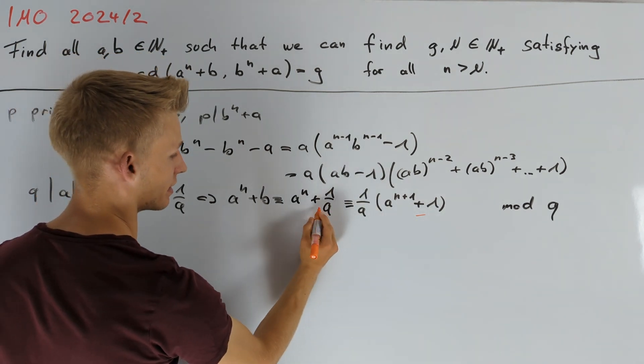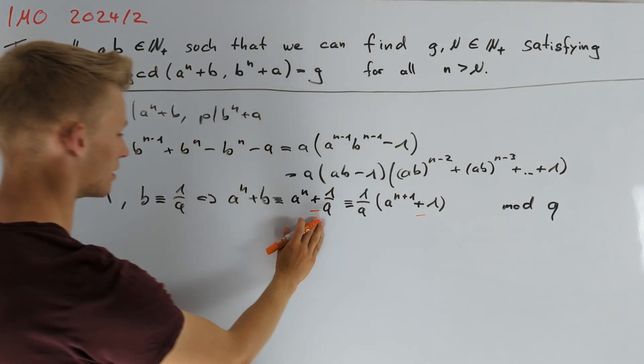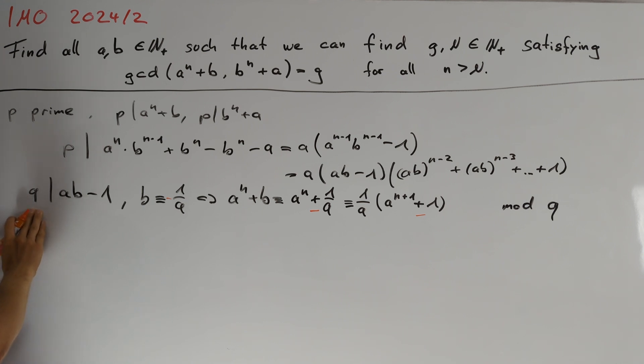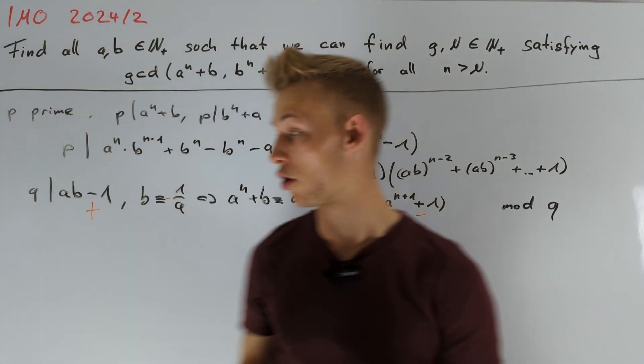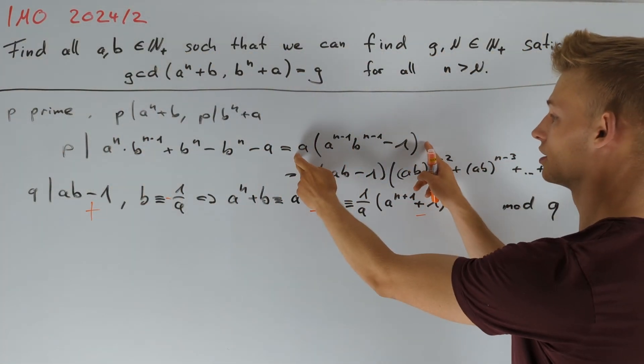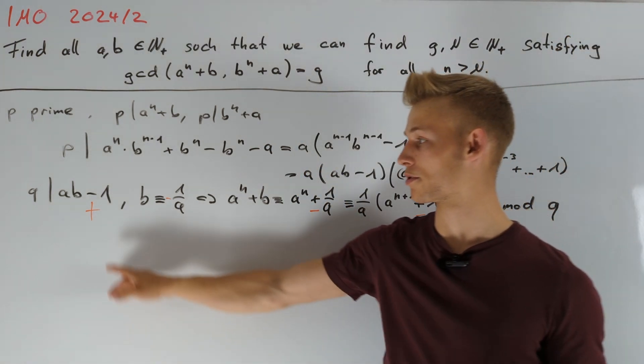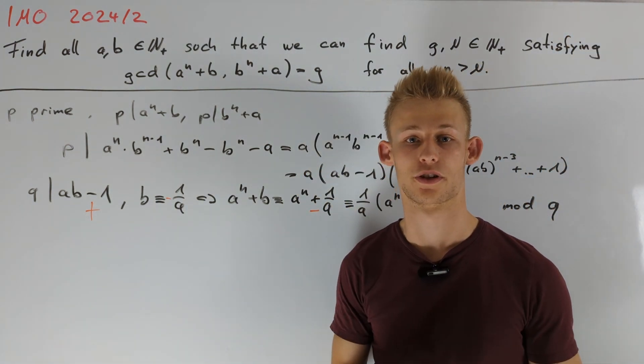At first, we want to have a minus at this point here. And to get this, it is necessary that b is congruent to minus 1 divided by a. And therefore, instead of considering a prime divisor q of ab minus 1, we want to consider a prime divisor of ab plus 1. Note that ab plus 1 is indeed also a factor of this expression here if n minus 1 is even. The idea of considering the number ab plus 1 is crucial for solving the problem.